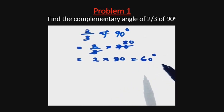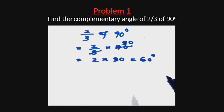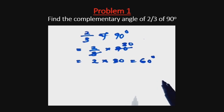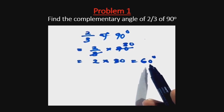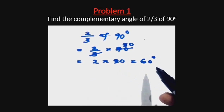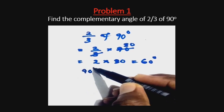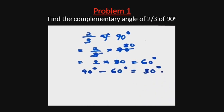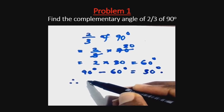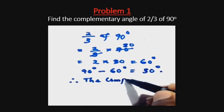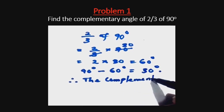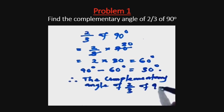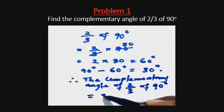Going back to the question, we can rephrase it by saying: find the complementary angle of 60 degrees, because 60 degrees is the same as 2/3 of 90 degrees. So the complementary angle of 60 degrees is 90 degrees minus 60 degrees, which gives us 30 degrees. We can therefore say that the complementary angle of 2/3 of 90 degrees is equal to 30 degrees.